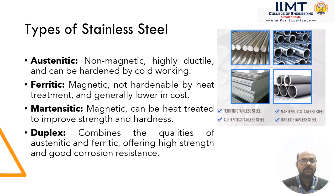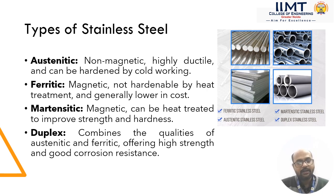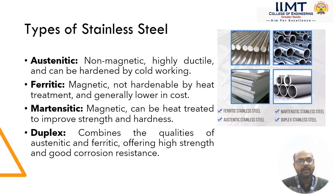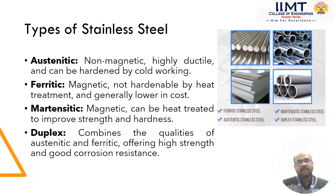Now we will discuss the types of stainless steel. Basically stainless steel can be divided into four types: first one is austenitic, second one is ferritic, third is martensitic, and fourth is duplex. Austenitic stainless steels are non-magnetic in nature, highly ductile and can be hardened by cold working. Ferritic stainless steel is magnetic in nature, not hardenable by heat treatment and generally lower in cost. Martensitic stainless steel is magnetic in nature and can be heat treated to improve strength and hardness. Duplex combines the qualities of austenitic and ferritic, offering high strength and good corrosion resistance.